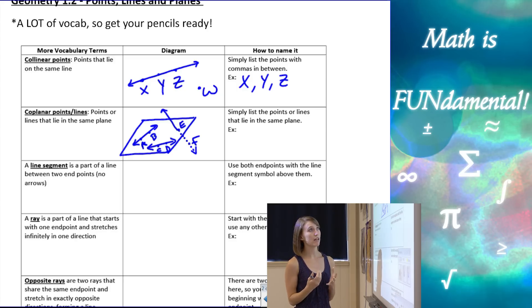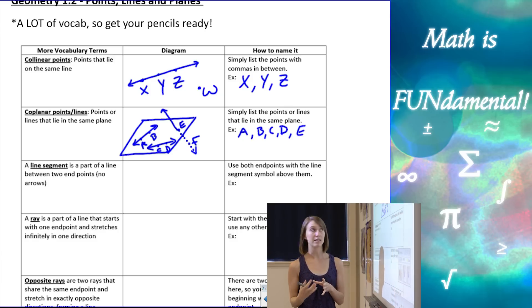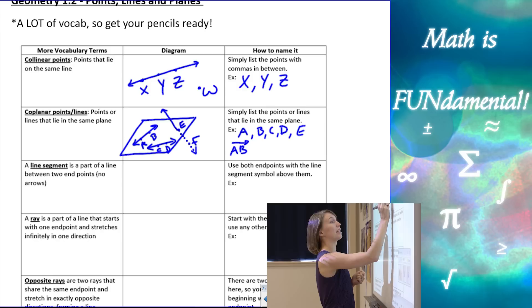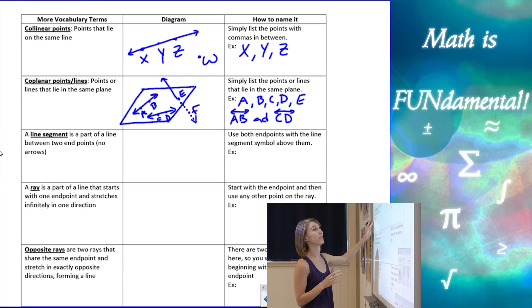All right, so here if I wanted to list points that are all coplanar, I could list A, B, C, D, and I can even put E on there because it's technically in the plane, but F is not. But if I'm listing my lines that are coplanar, I would have line A, B, and line C, D. And even though E is in the plane, F isn't. So that line E, F would not be in the plane. It would not be coplanar with the others.